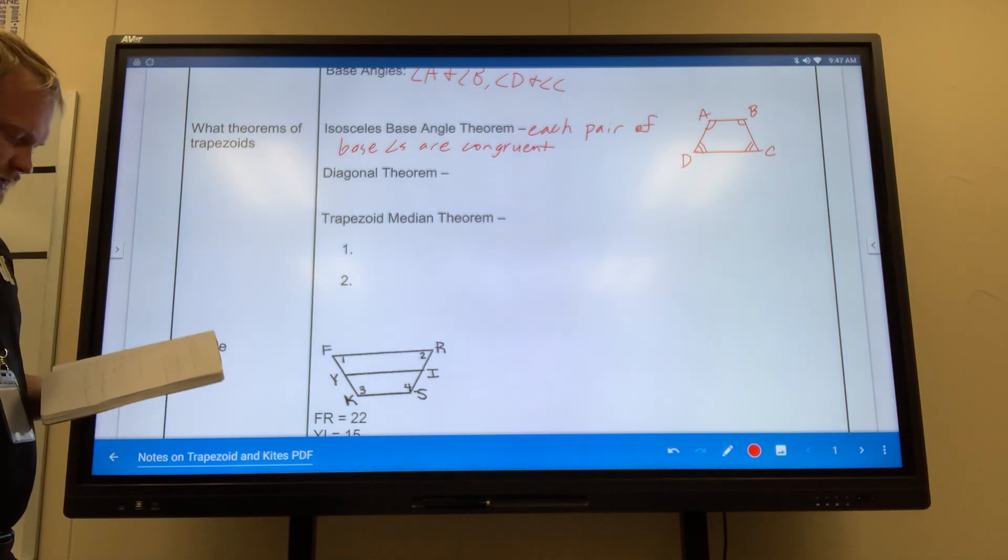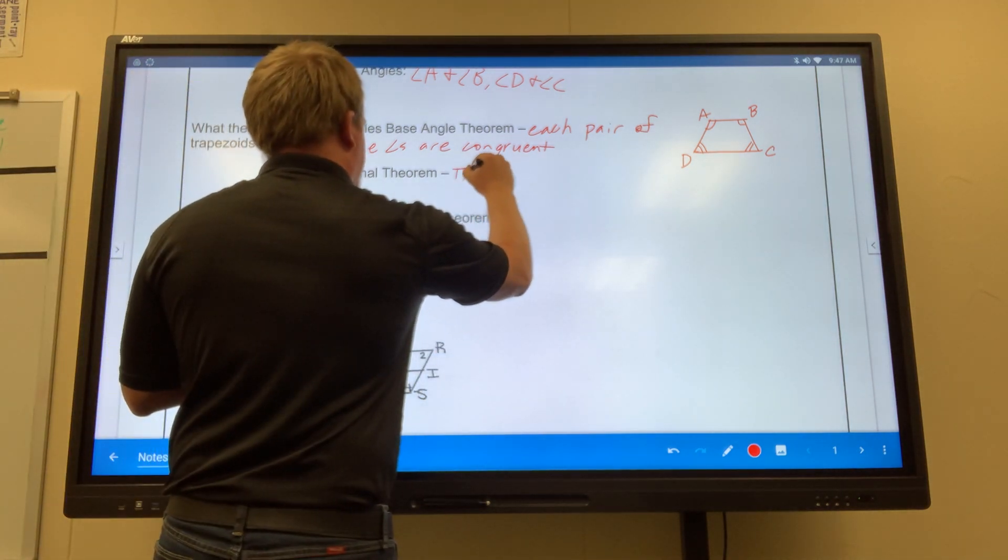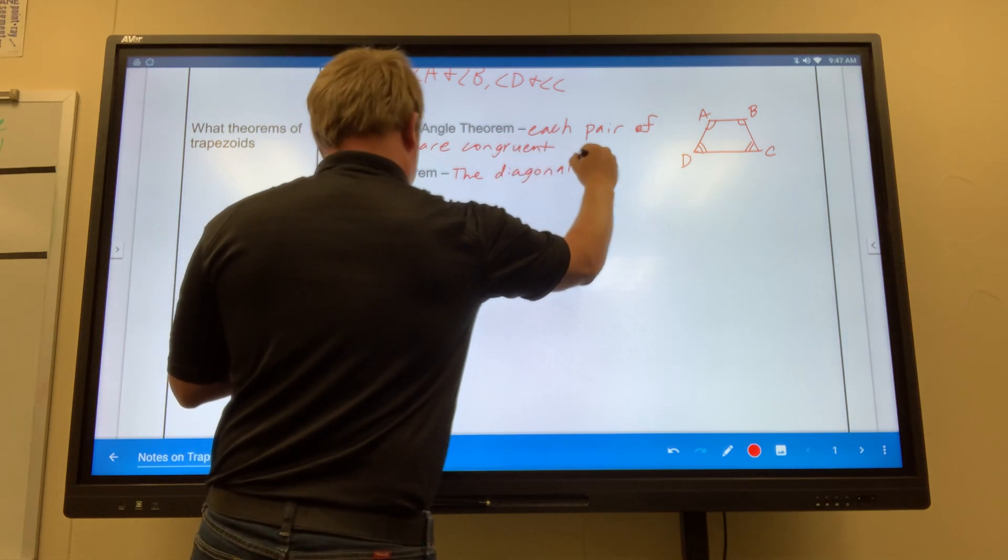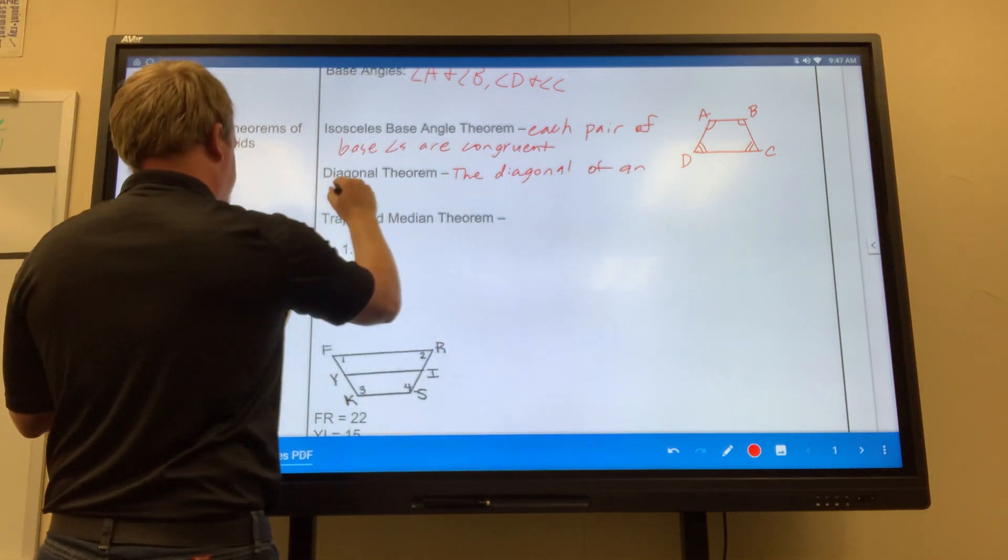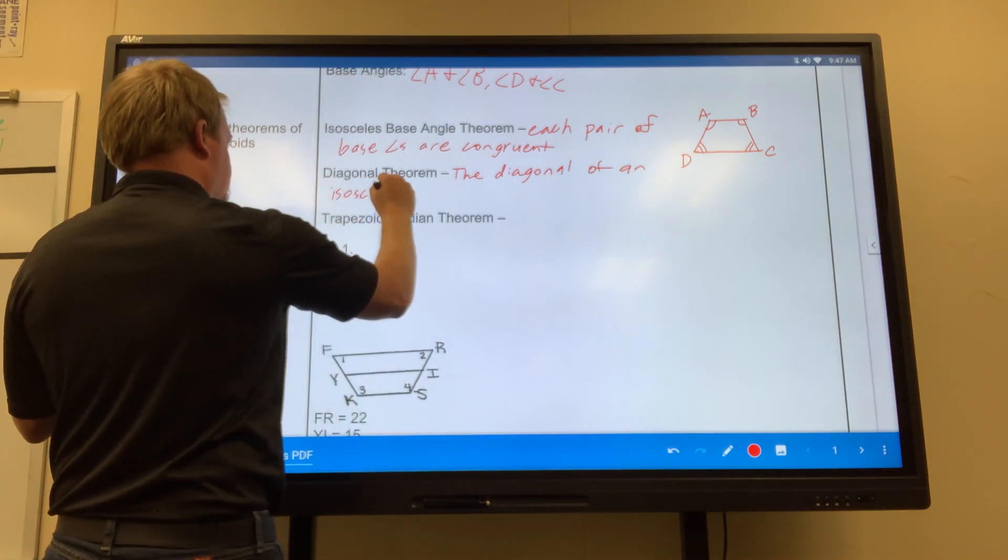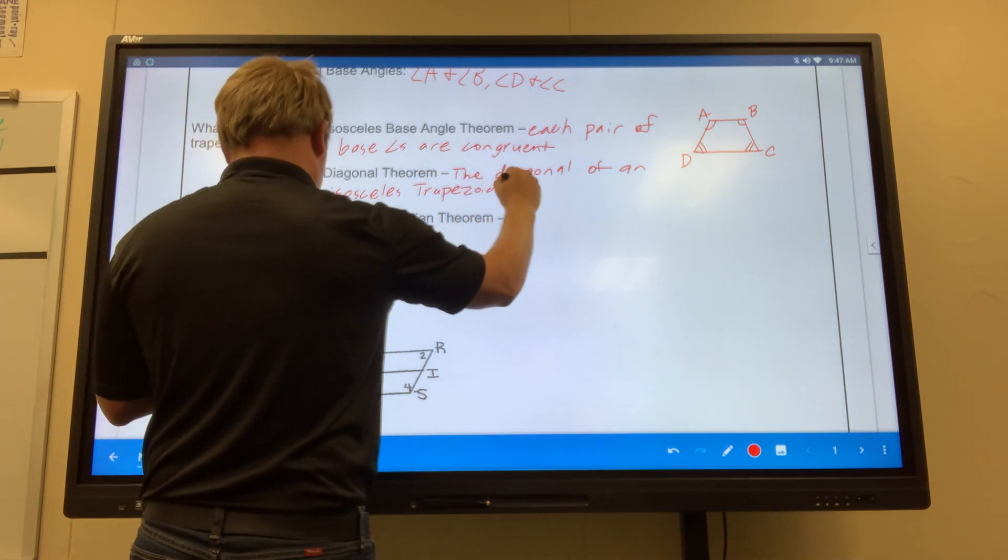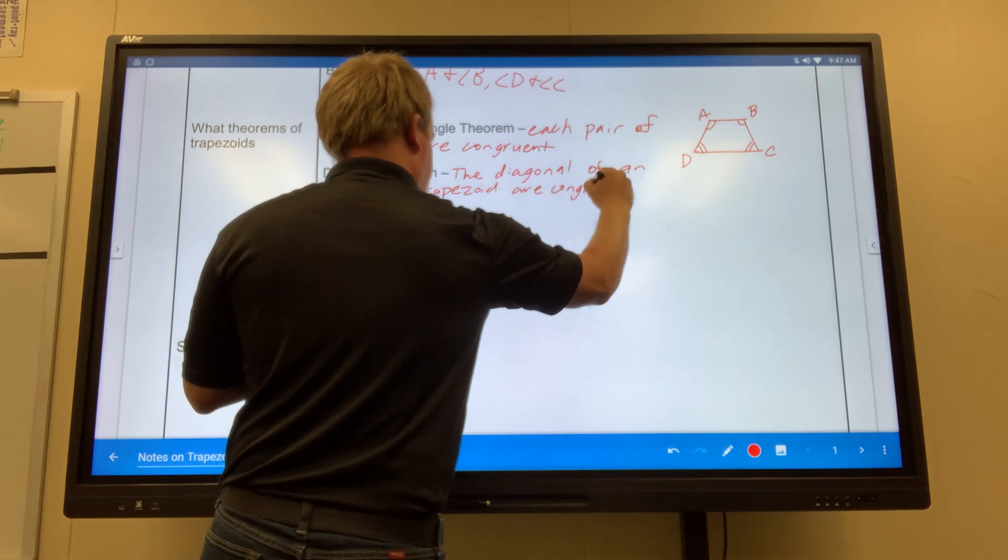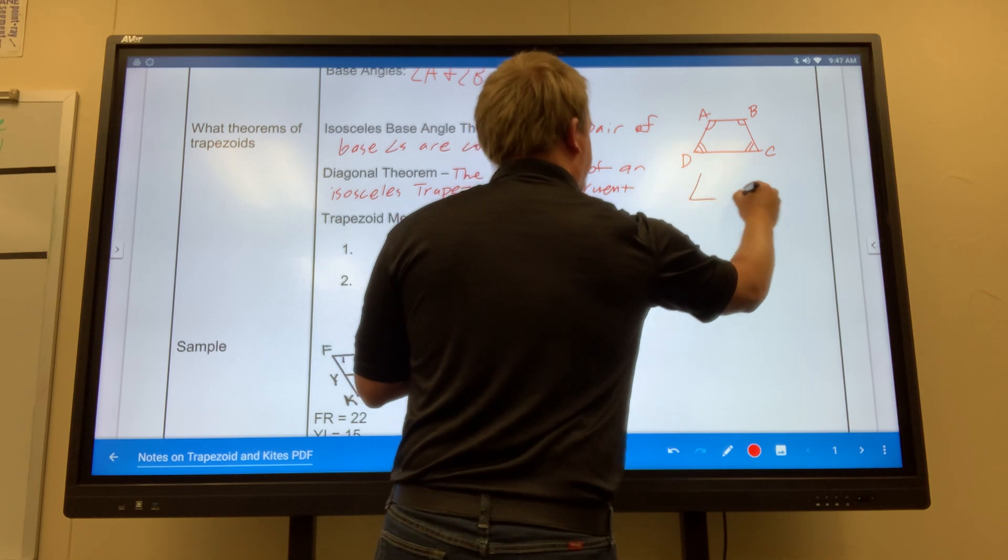Now, diagonal theorem. The diagonal of an isosceles trapezoid are congruent.